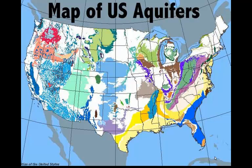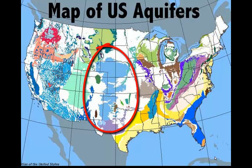We monitor them in different ways because they are being used in a variety of ways. We are going to focus the rest of this presentation on the High Plains or Ogallala Aquifer, which reaches from the southern extent of the Panhandle of Texas all the way north through the Panhandle of Oklahoma and into Kansas, Nebraska, a little bit of South Dakota, eastern Wyoming, eastern Colorado, and eastern New Mexico.